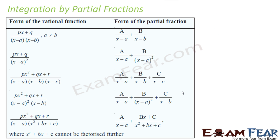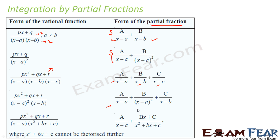So here are the patterns we use. If we have the form (px + q) / [(x − a)(x − b)], the degree of the denominator is 2. We convert this into partial fractions: A/(x − a) + B/(x − b). If it is of the form (px + q) / (x − a)², we convert it to A/(x − a) + B/(x − a)².